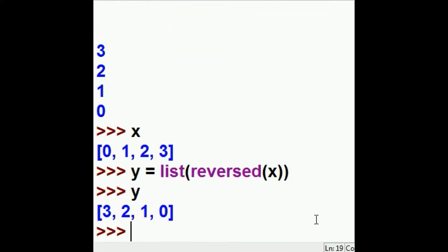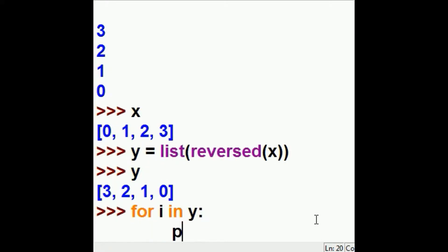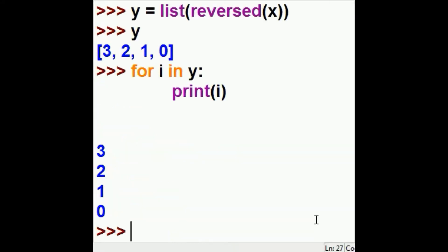Now what's in Y? 3, 2, 1, 0. Now for i in Y, colon, print i. And now it iterates through the list. Wow.